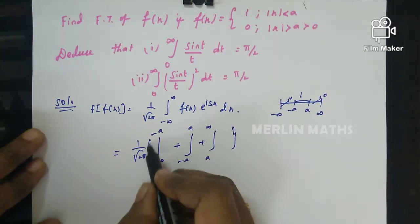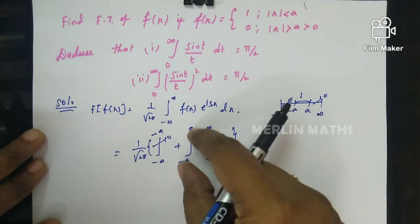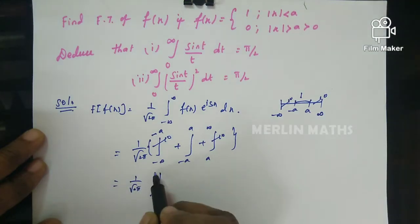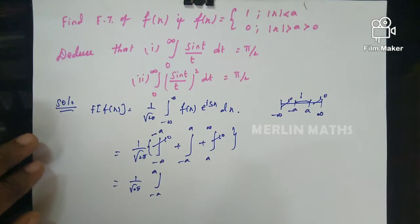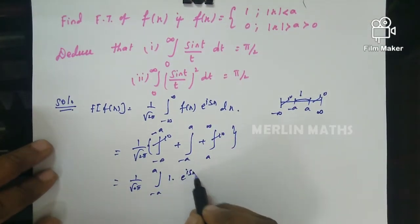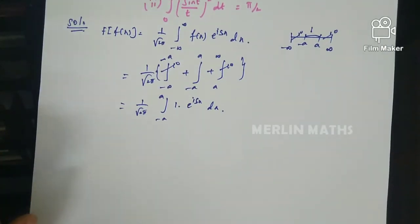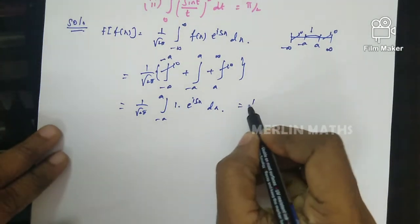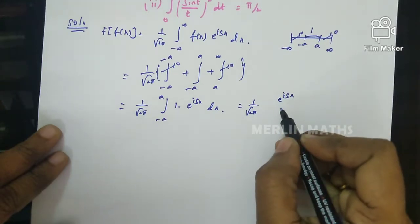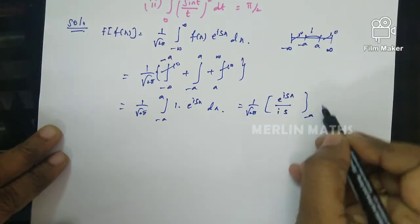We can split the integral into 3 intervals. The first and last will become 0. Only in the interval -a to +a does the function take the value 1. So we have (1/√(2π)) ∫₋ₐ^a 1 · e^(isx) dx. Now we integrate: the integral of e^(isx) is e^(isx)/(is), evaluated with limits -a to +a.